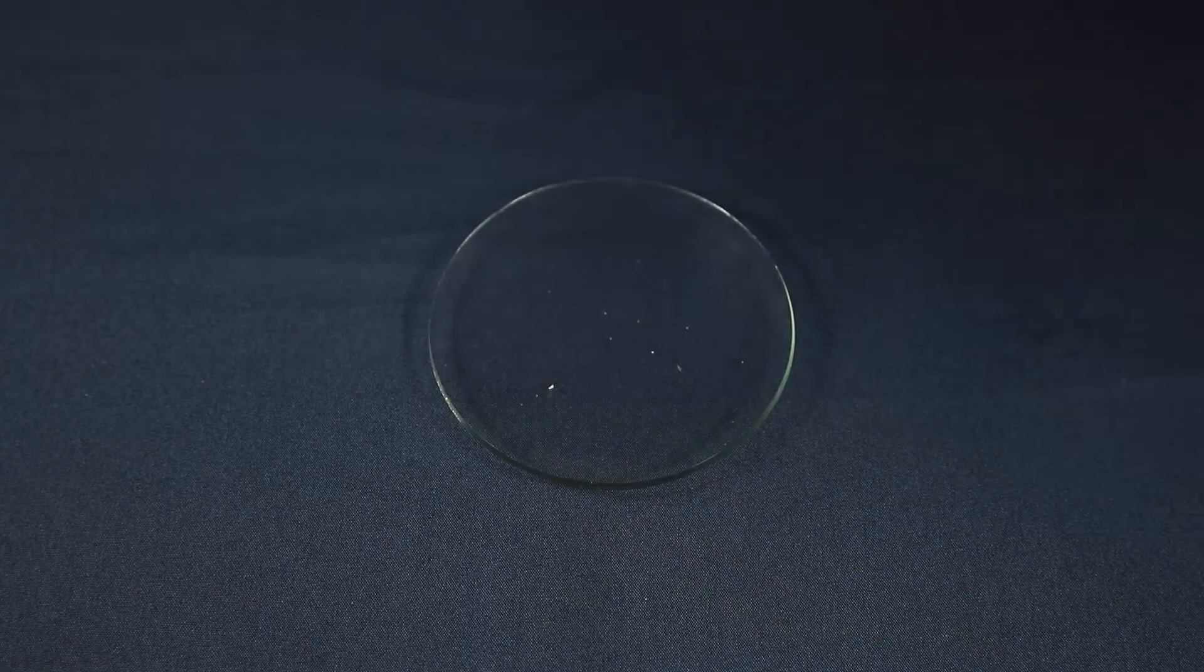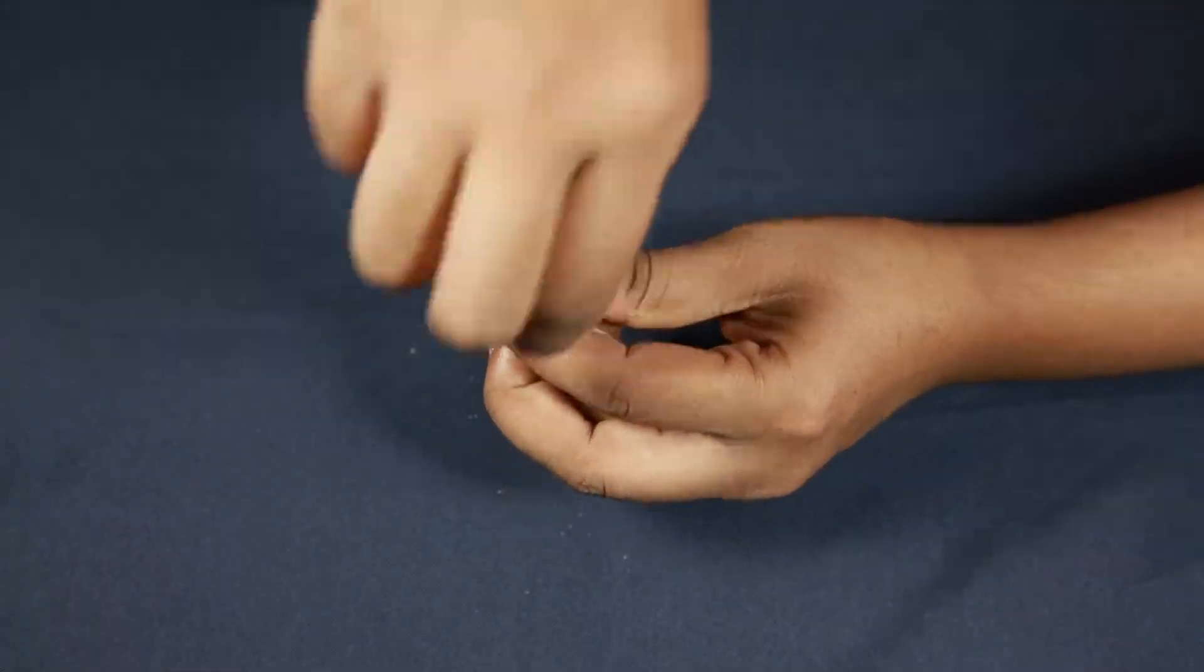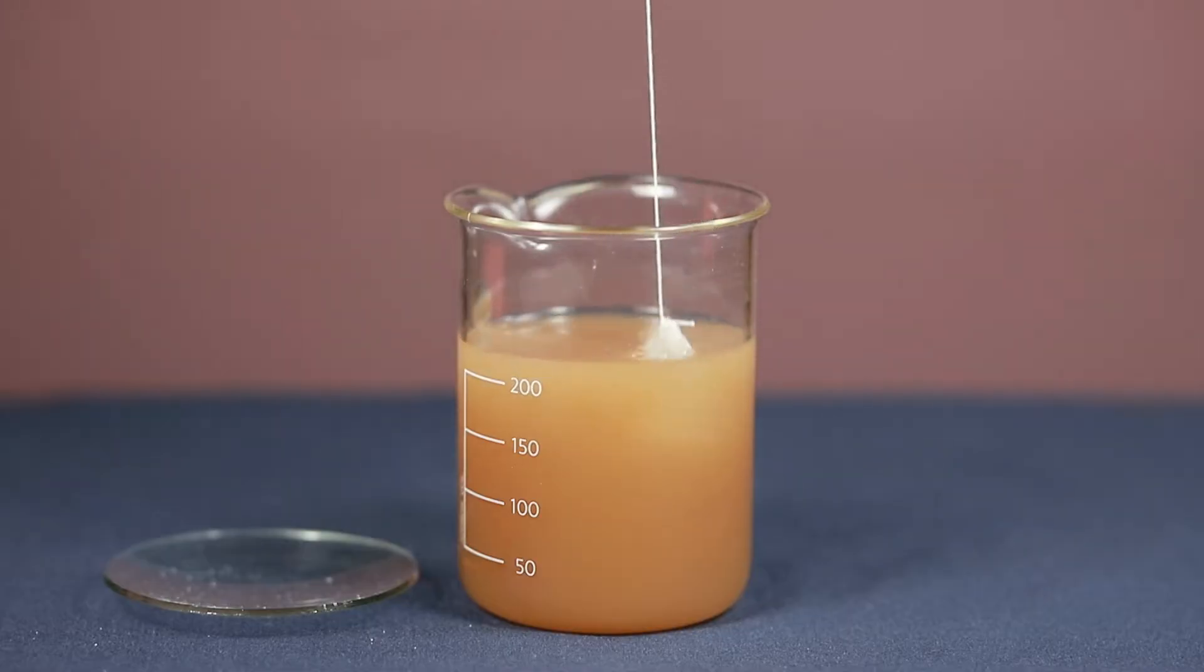Take a piece of alum and tie it with a thread. Hold the thread and swirl the alum in water two to three times.